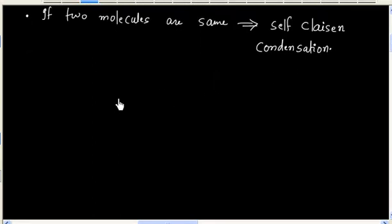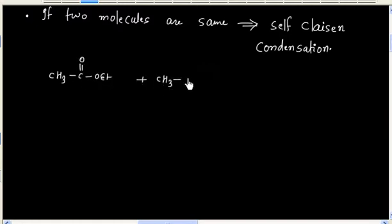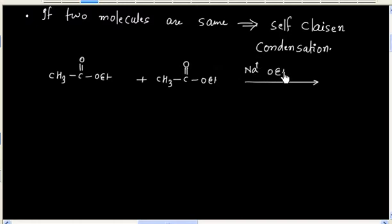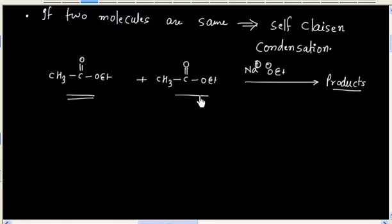For example, let us consider this reaction. Now in this case, both molecules are the same, so we have an example of self-Claisen condensation.